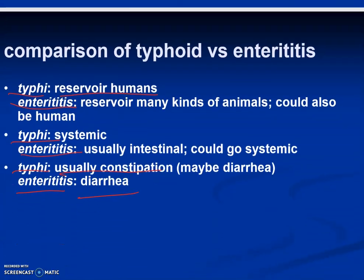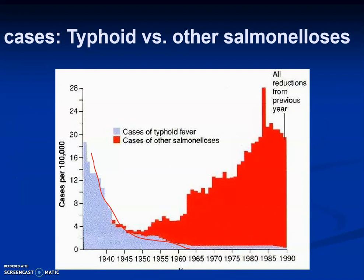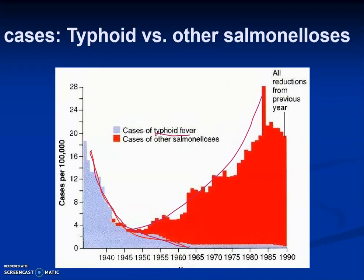Comparing Salmonella Typhi versus Enteritidis: Typhi's reservoir is humans; Enteritidis has many animal reservoirs and can also be human. Typhi is systemic; Enteritidis is usually intestinal but can go systemic. Typhi usually causes constipation, while Enteritidis causes diarrhea. An older chart shows typhoid cases on a steady decline while other salmonellosis cases have been on a steady rise.